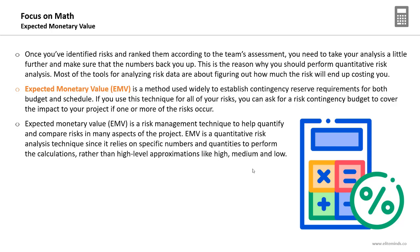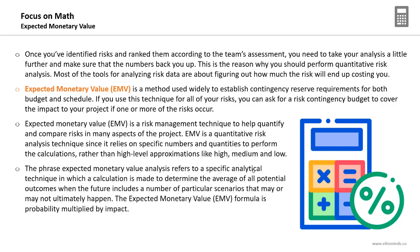The key difference between EMV and subjective analysis is that in EMV you rely on specific numbers, not high-level approximations like 'very high,' 'medium,' or 'low.' The phrase 'Expected Monetary Value analysis' refers to a specific analytical technique where a calculation determines the average of all potential outcomes when the future includes scenarios that may or may not happen. The formula is simply: probability (in percentage) multiplied by the impact, which is usually a budget or schedule value.